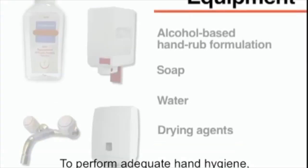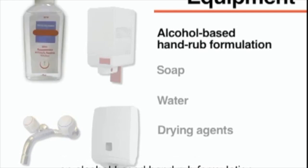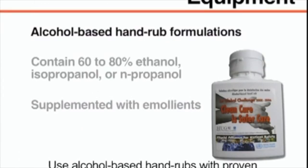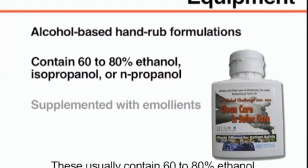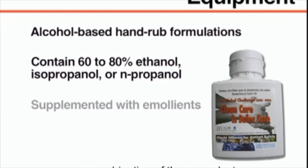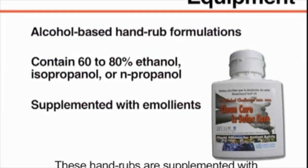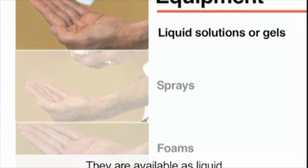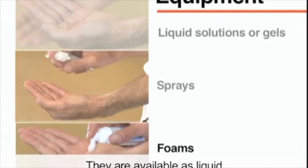To perform adequate hand hygiene, you will need an alcohol-based hand rub formulation or soap, water, and drying agents such as disposable paper or cloth towels. Use alcohol-based hand rubs with proven antimicrobial efficacy. These usually contain 60–80% ethanol, isopropanol, or n-propanol, or a combination of these products, supplemented with emollients to protect the skin. They are available as liquid solutions, gels, sprays, or foams.